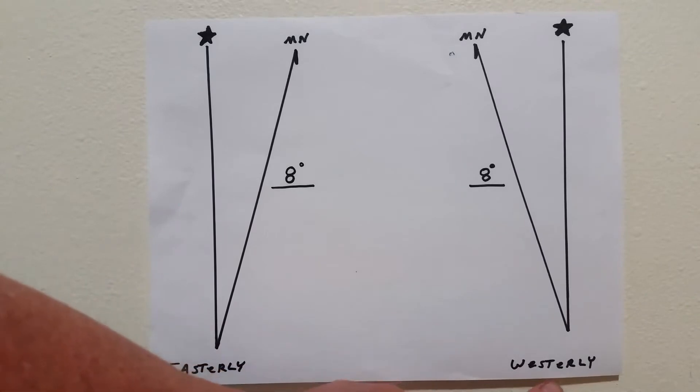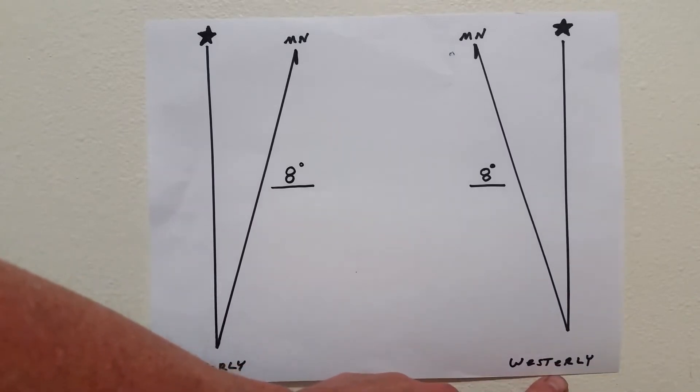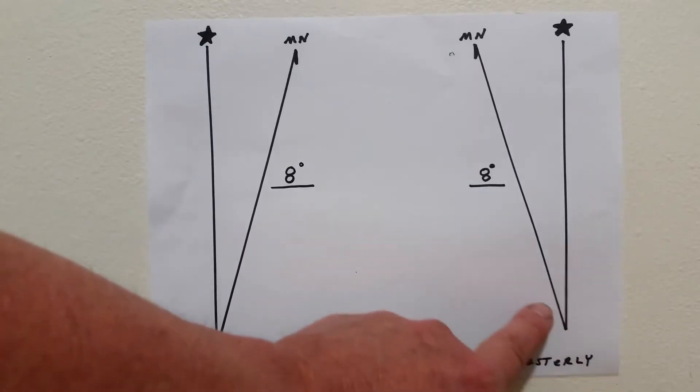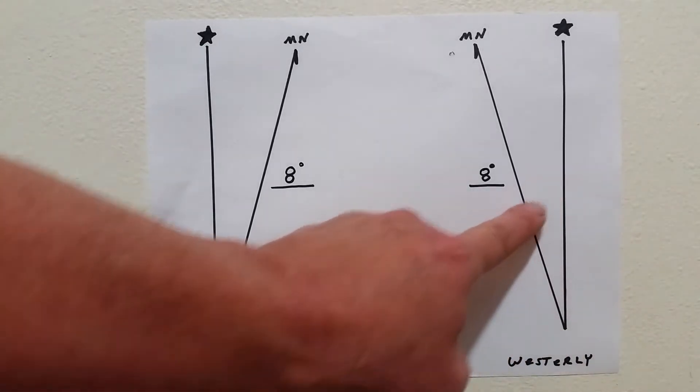If you live on the east side of the agonic line, which is zero degrees, you'll have this westerly map, which shows you the west declination.